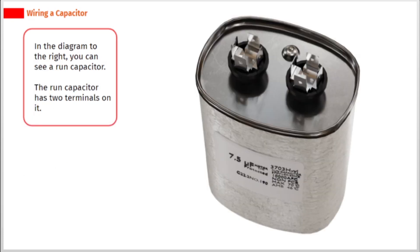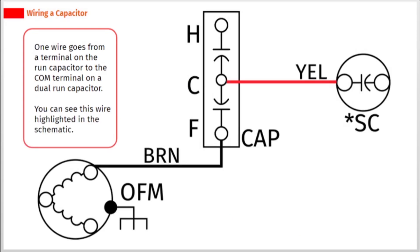In the diagram to the right, you can see a run capacitor. The run capacitor has two terminals on it. One wire goes from a terminal on the run capacitor to the COM terminal on the dual run capacitor. You can see this wire highlighted in the schematic.